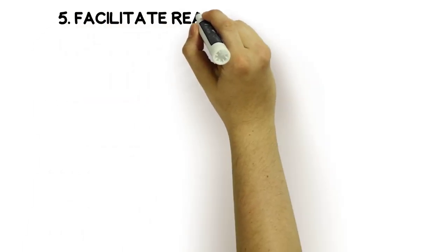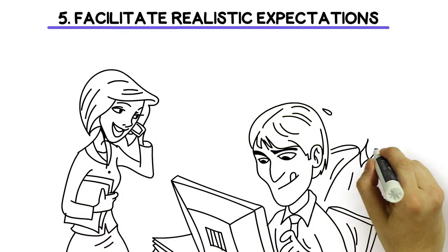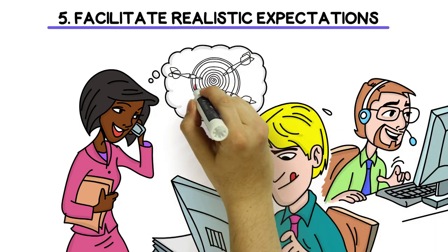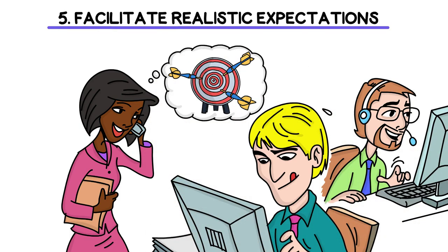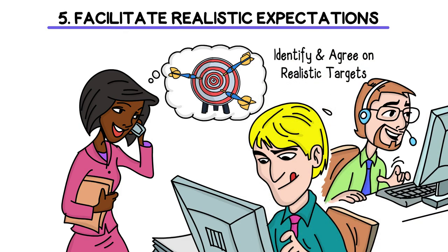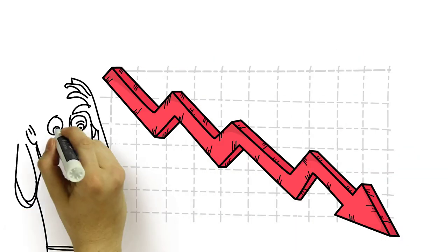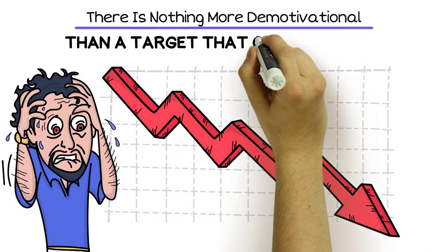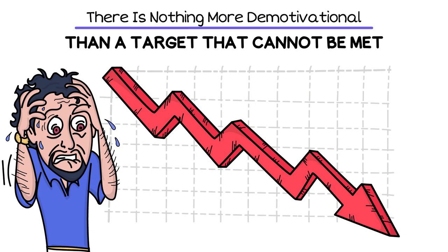Five: Facilitate realistic expectations. As a leader, your job is to facilitate your team and individuals within it to do the best work they can. Ensure that you speak to your people to identify and agree on realistic targets. There is nothing more demotivational than a target that cannot be met. Targets should be discussed frequently and adjusted as you navigate challenging market conditions.